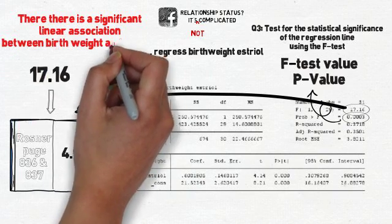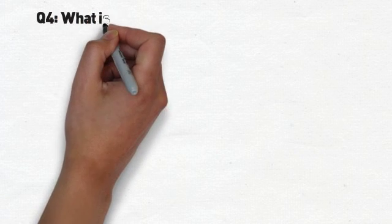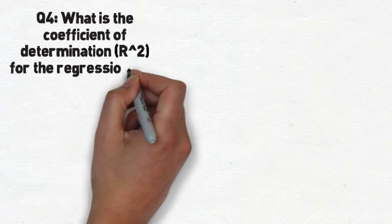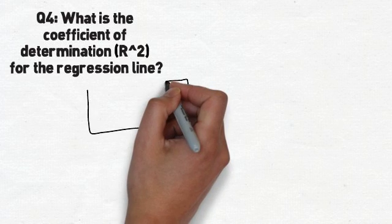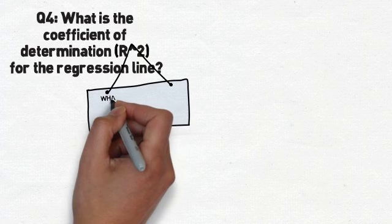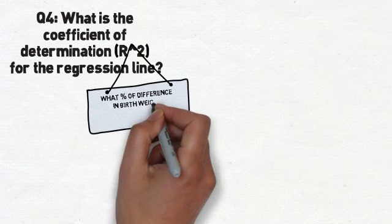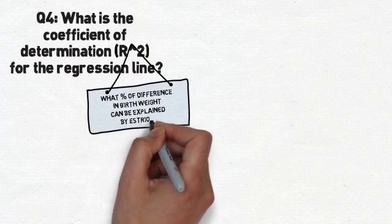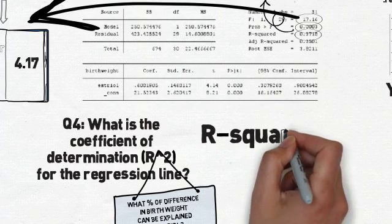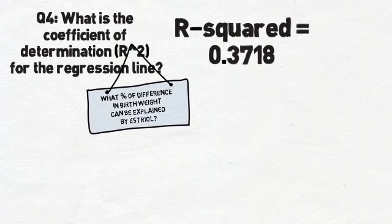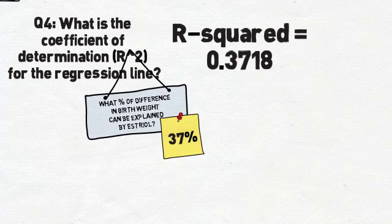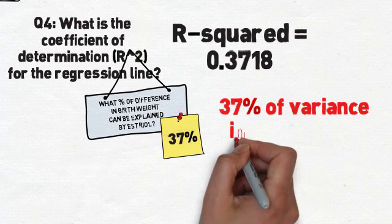Question 4 asks for the coefficient of determination — the R-squared — for the regression line. This tells us what percentage of the variability in birth weight can be explained by estriol levels. We don't need to run any additional tests because our F-test output already gives us the R-squared, right here: 0.3718. That means 37% of the variability in birth weights is explained by estriol levels.